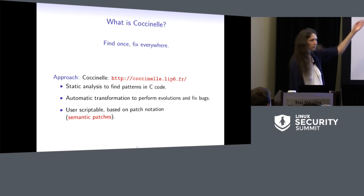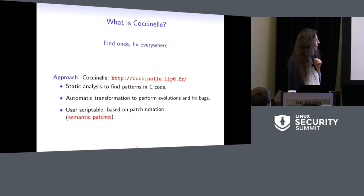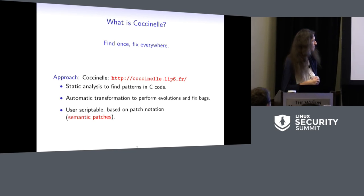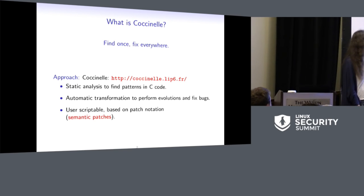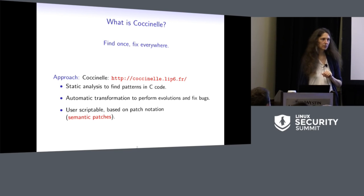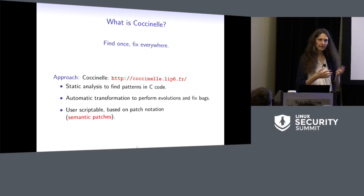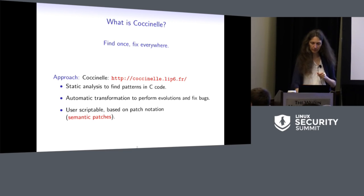Our approach to address this problem is the tool Coccinelle. This is an open source tool available in many Linux distributions as well as on our website. It provides two things: static analysis to find patterns in the code, and automatic transformations to perform evolutions and bug fixes on those patterns. The really novel part is that it's user-scriptable and based on patch notation, so you can take a fragment of code you don't like, generalize it a bit, run it on the entire kernel, and get results. Ideally there should not be too much new stuff to learn.